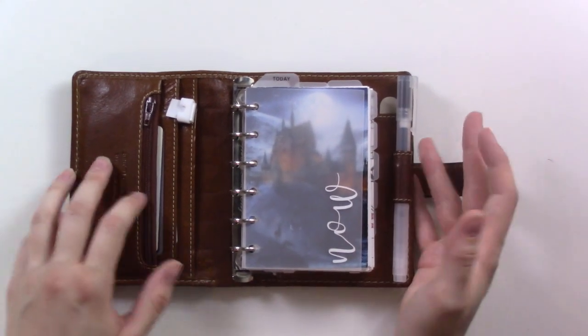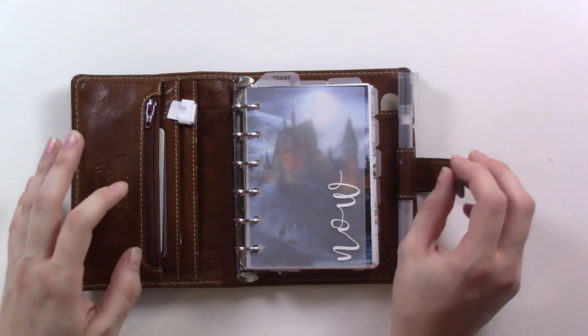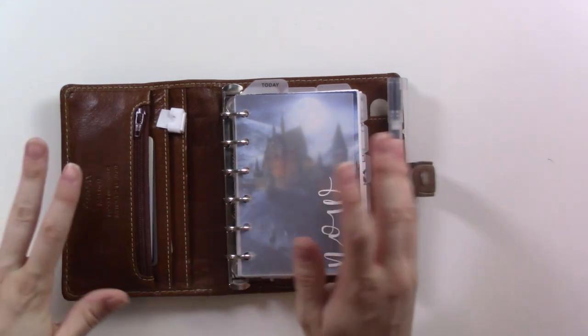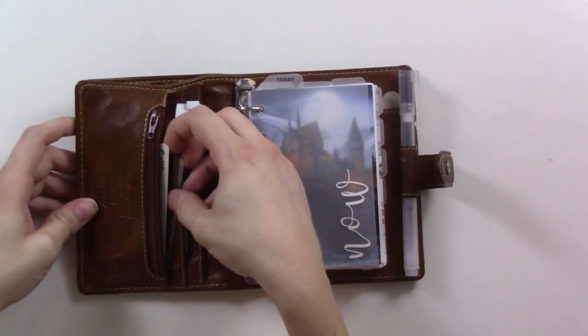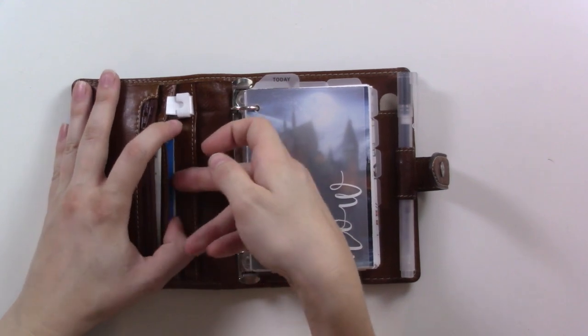This is my Filofax Malden pocket size. I've been in this since I got it and I use it as my wallet as well as my planner. In the front here we've got my driver's license and the two most frequently used credit cards.